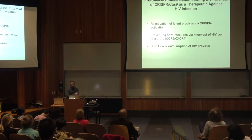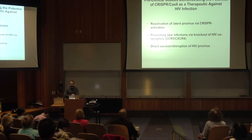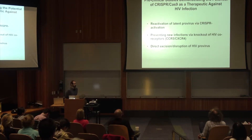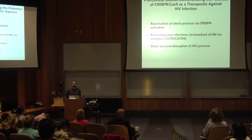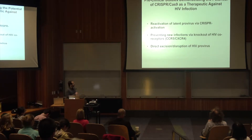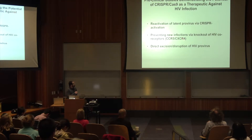Several studies have already demonstrated the potential of using CRISPR-Cas9 as a therapeutic against HIV. CRISPR-Cas9 has been used to reactivate the latent provirus, to prevent new infections by knocking out the co-receptors that the virus uses, and to directly attack the provirus. Today I'm going to focus specifically on directly attacking the virus, and I'll talk a little about preventing new infections by knocking out the co-receptors.